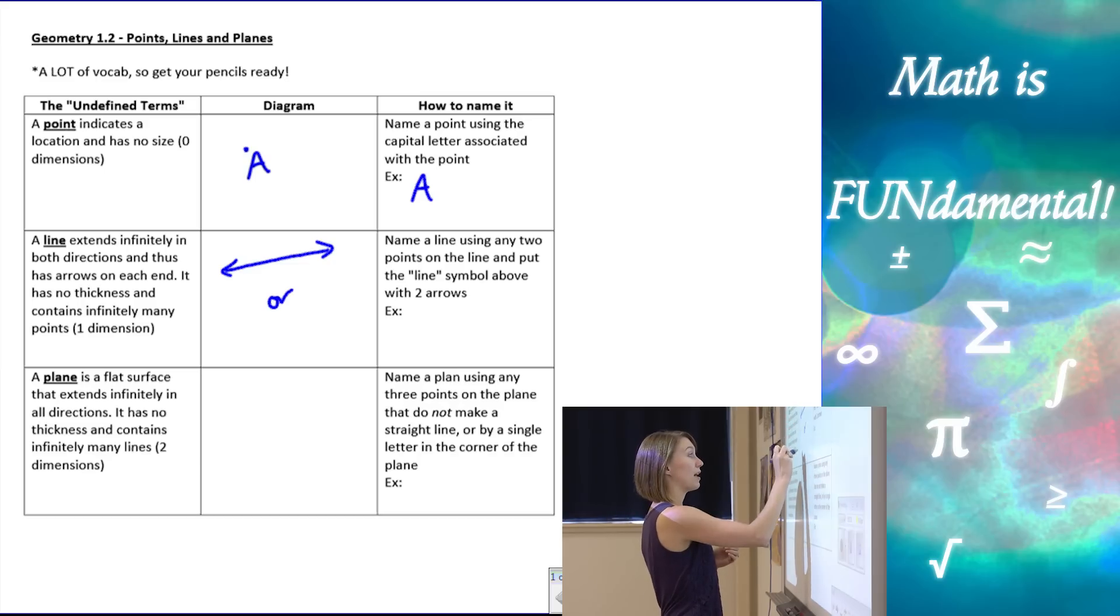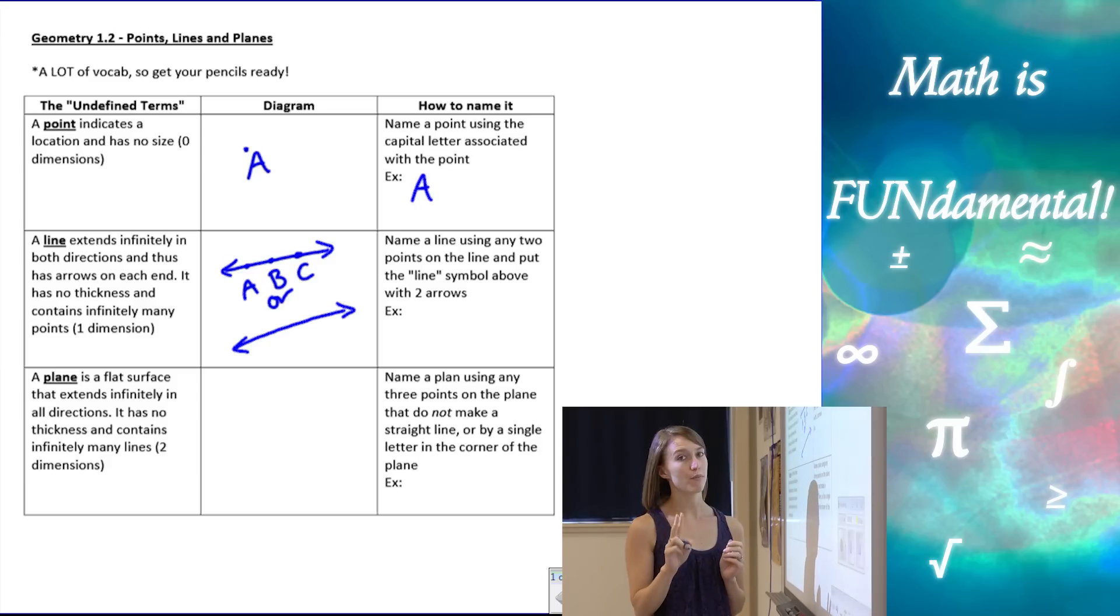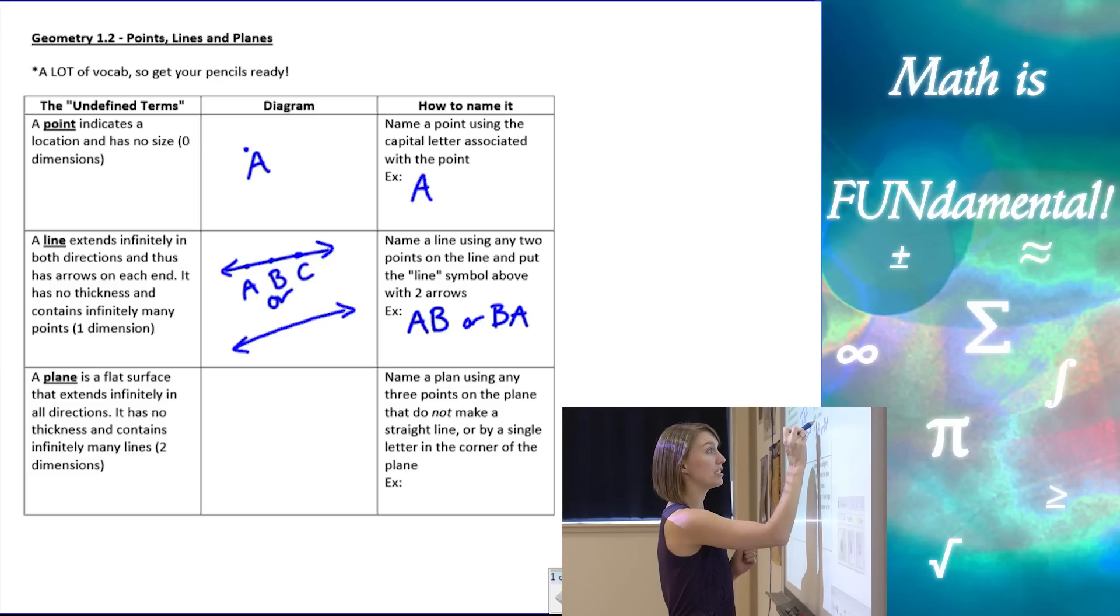And there's a couple different ways that we can name a line. Either we can name it using points on the line. Let's say we have the points A, B, and C. We can use two of the points, only two points, and name it. So for example I can do A, B, or I can do B, A, but in order to indicate that it's a line we have to use the line symbol, which looks like a line. It has two arrows on the end and it goes right above those letters.